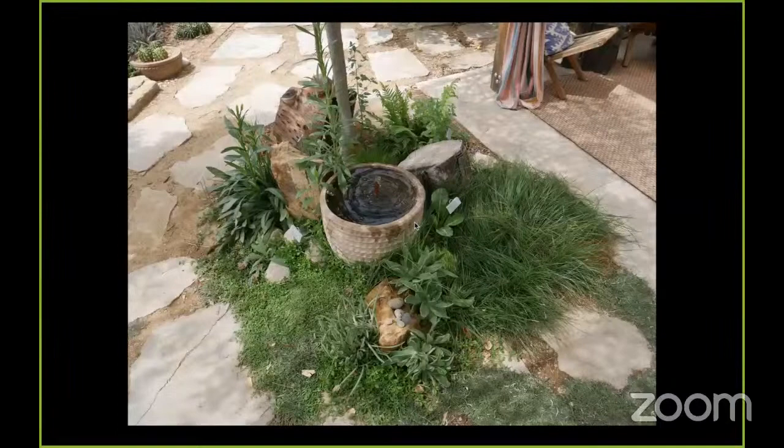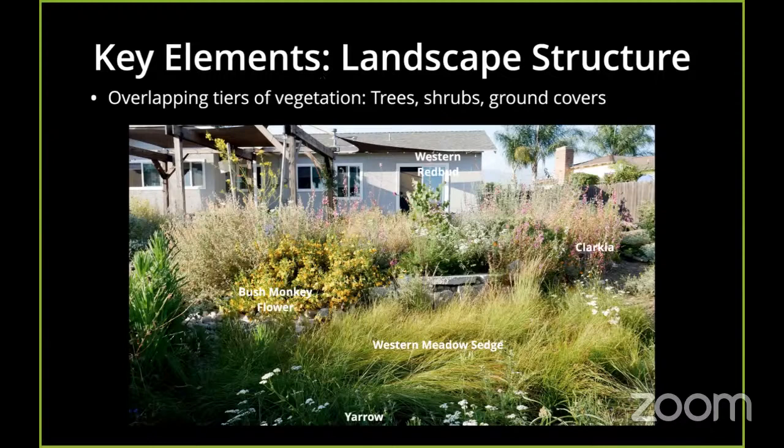So that's water. It's not rocket science, but it's super important. Another key element is the physical structure of the landscape itself — basically overlapping tiers of vegetation of various densities. We're talking trees and shrubs and ground covers.